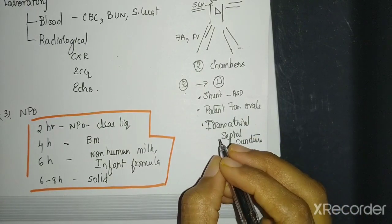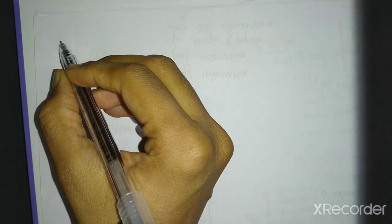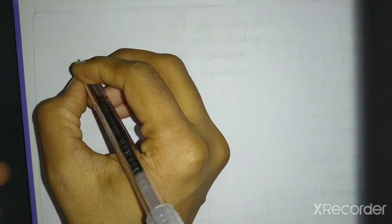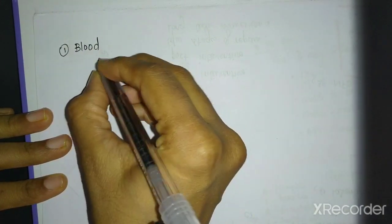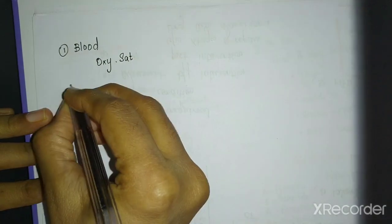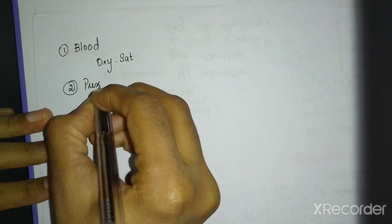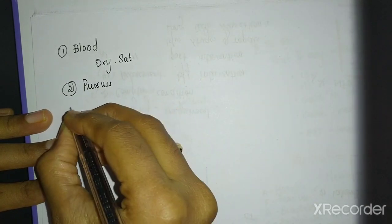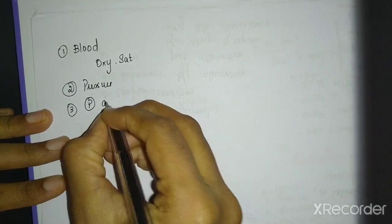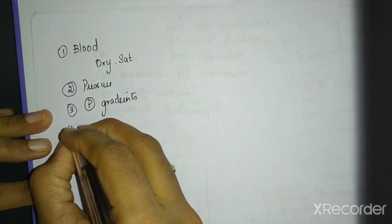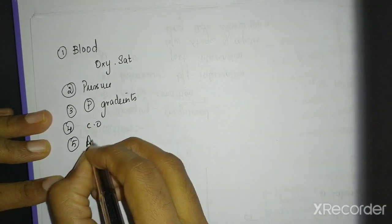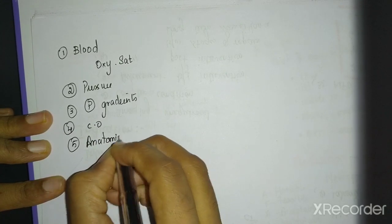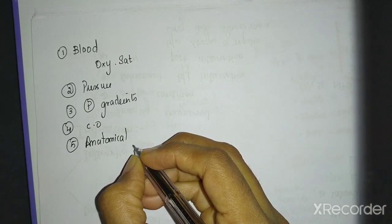And what are you going to do? You have entered the chambers. So you can take blood. With blood, what are the things you can measure? Basically oxygen saturation. You can measure pressures. You can measure pressure gradients. Then you can measure cardiac output. Then you can do anatomical assessments. So we will see each of them in short detail.